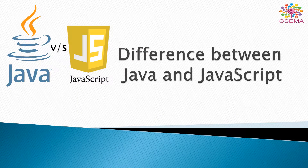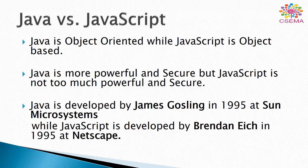Hi, welcome to CACMA. Now we are going to differentiate Java and JavaScript. Java is an object-oriented programming language while JavaScript is an object-based scripting language.